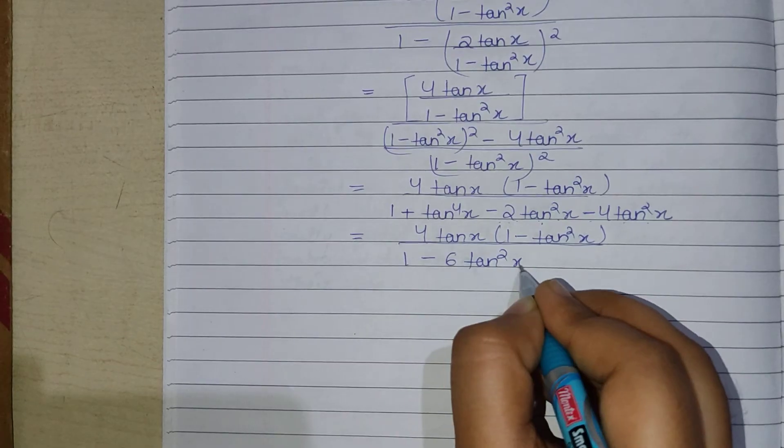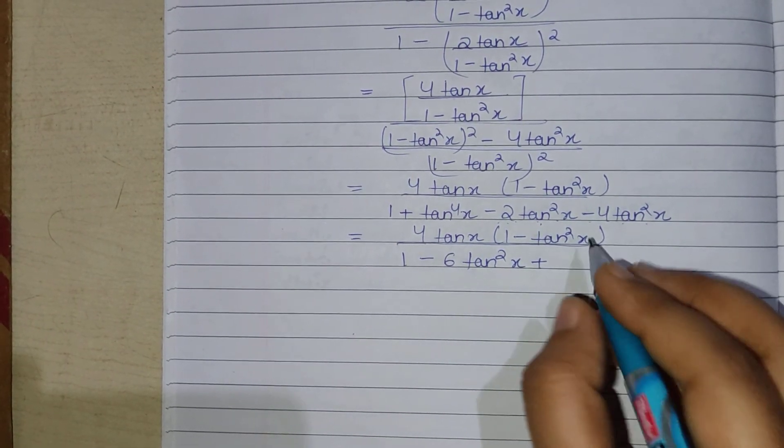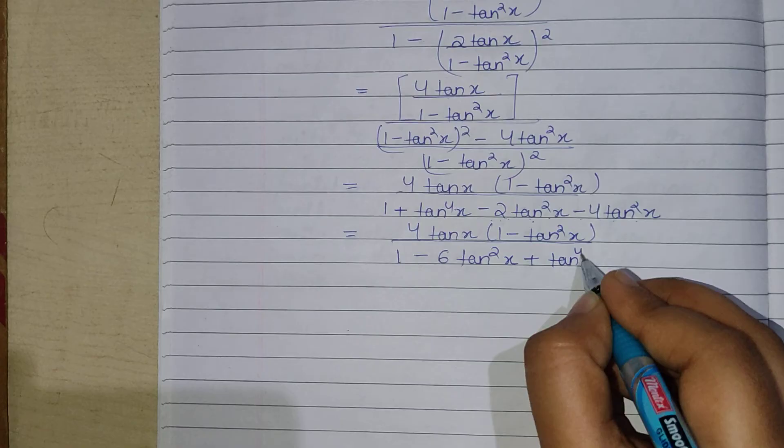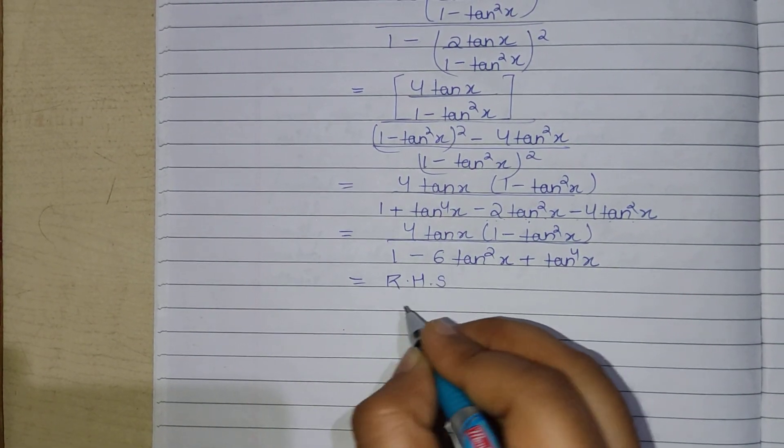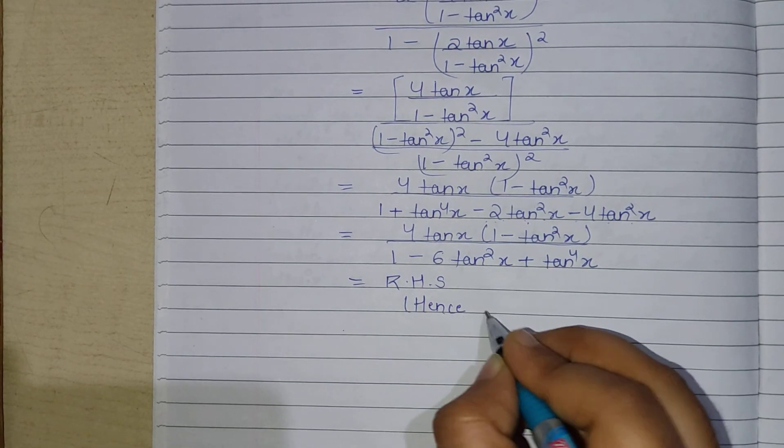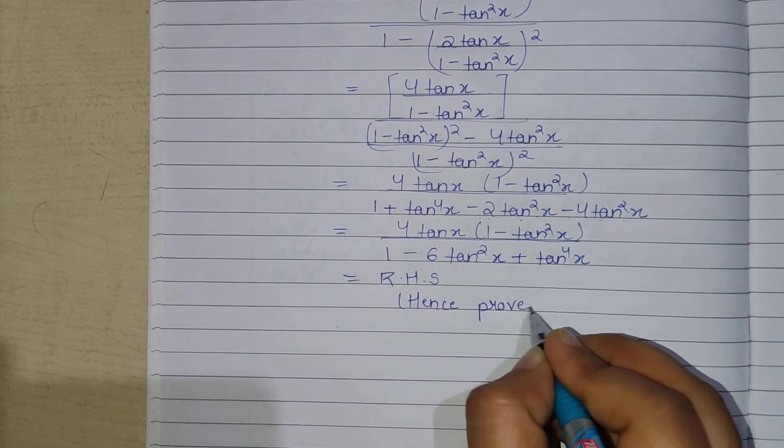6 tan square x and this one is tan to the power 4x. This is our RHS. Hence, the question is proved. This is the solution of this question.